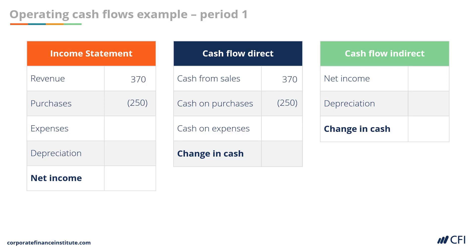Cash expenses of $40,000 are recorded as expenses on the income statement and as a cash expense on the direct cash flow statement. The depreciation expense of $55,000 is recorded on the income statement as an expense, but is not recorded on the direct cash flow statement as it is a non-cash expense. Netting all expenses from revenues on the income statement gives us net income of $25,000. On the direct cash flow statement, netting all cash inflows and outflows gives a change in cash of $80,000.